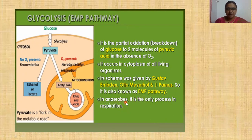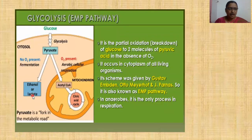In anaerobic life, glucose is converted into pyruvic acid by glycolysis in the cytosol. When pyruvate is converted into ethanol or lactate in the absence of oxygen, the process is called fermentation. When pyruvate enters the mitochondria in the presence of oxygen, it undergoes aerobic cellular respiration. Therefore, pyruvate is a fork in the metabolic road.